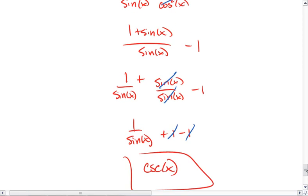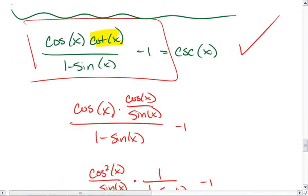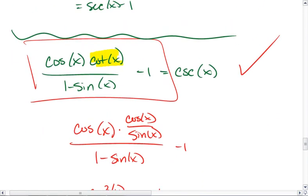So those are huge. Also our reciprocal identities are very common. And also rewriting things in terms of sine and cosine.